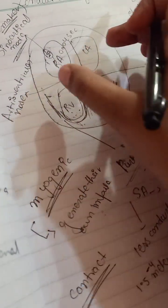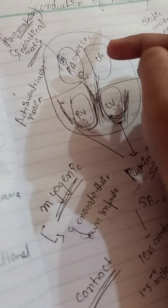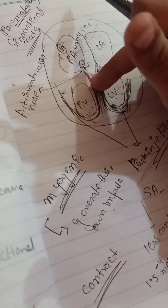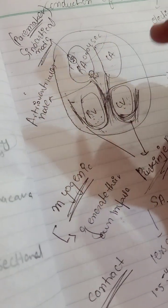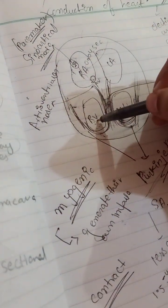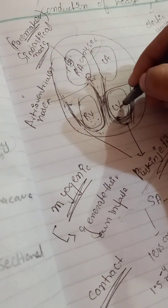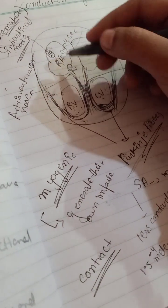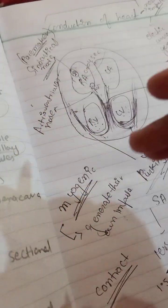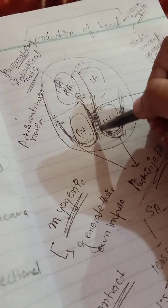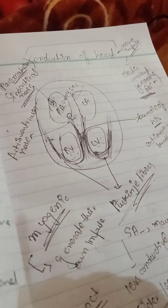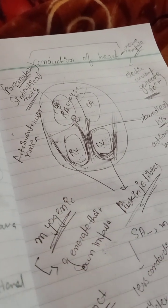First, blood comes into both atria, which contract. The nerve impulse goes to the AV node and blood moves into the ventricles. The Bundle of His gives the impulse to the Purkinje fibers. From the left ventricle, blood moves into the aorta, then to the coronary artery, pulmonary artery, and systemic artery.